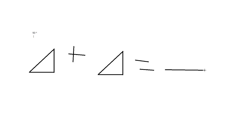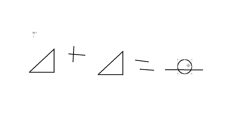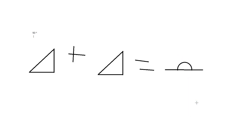That gives us a straight angle, which also has part of a circle in it. This is a 180 degree angle.